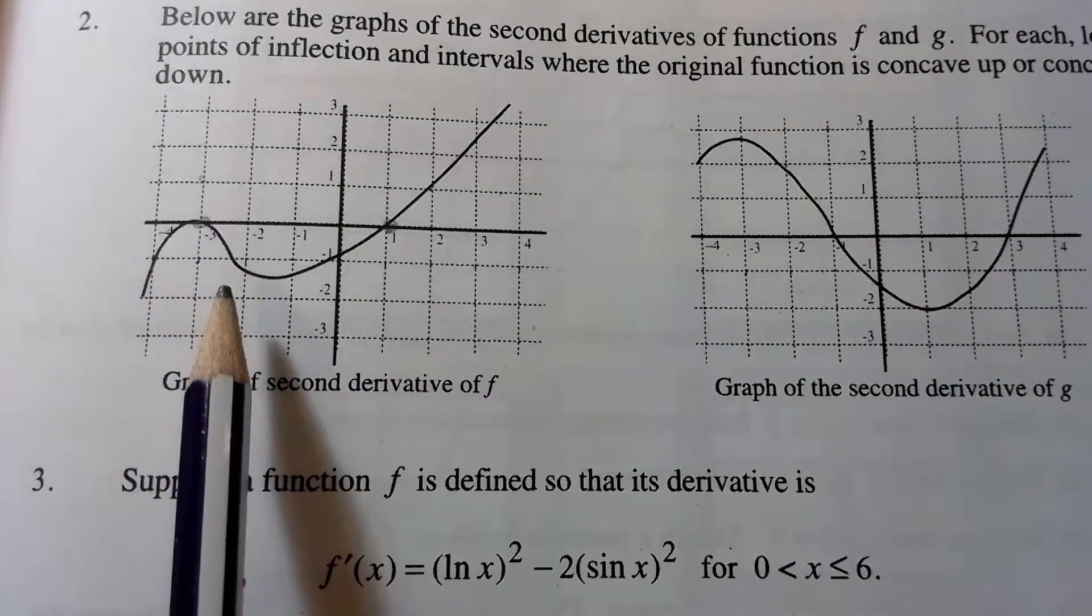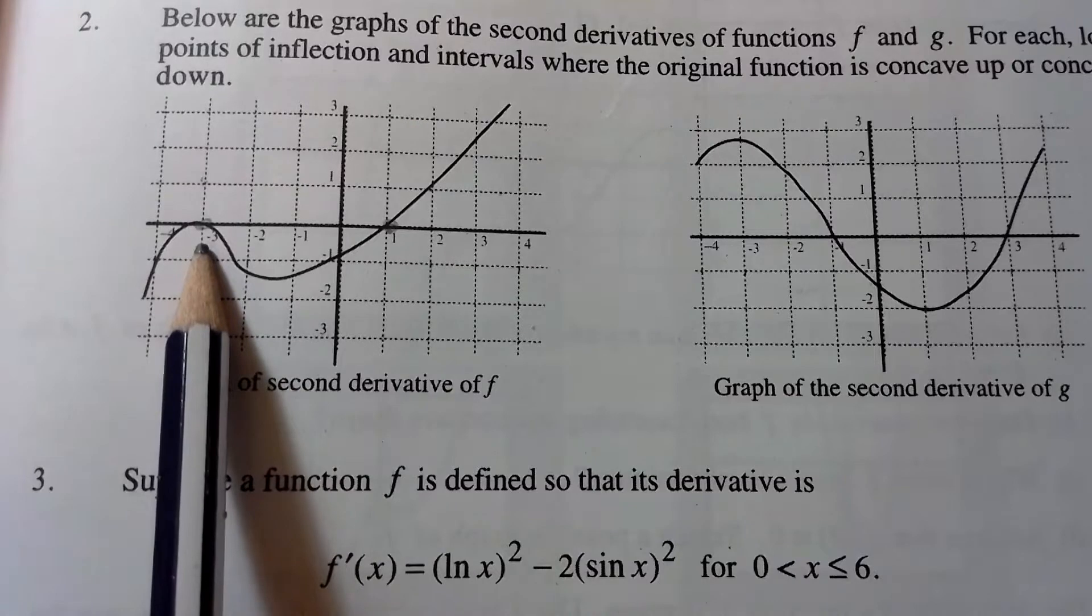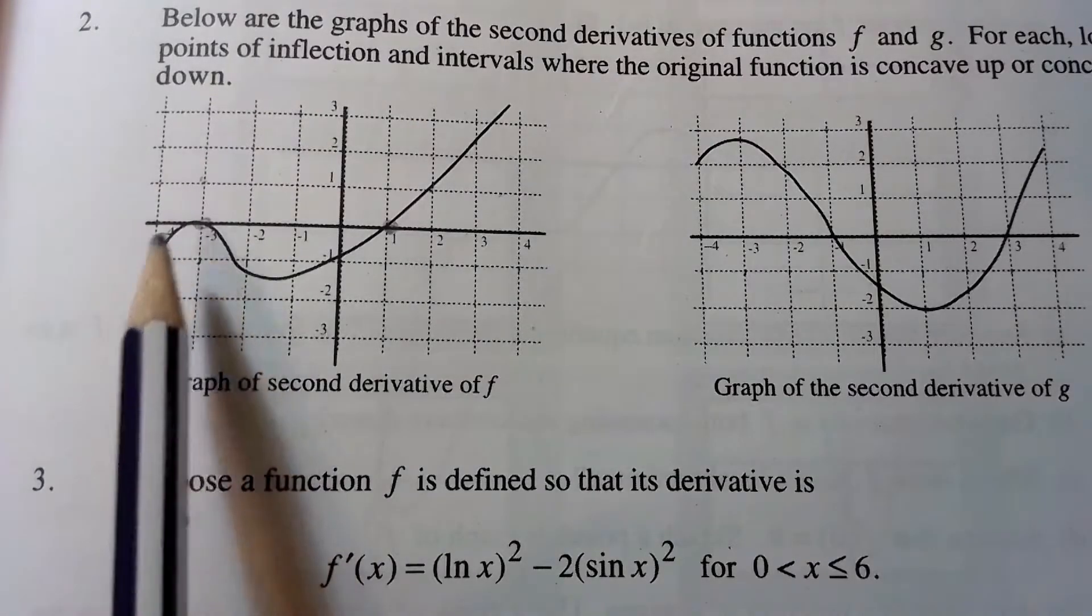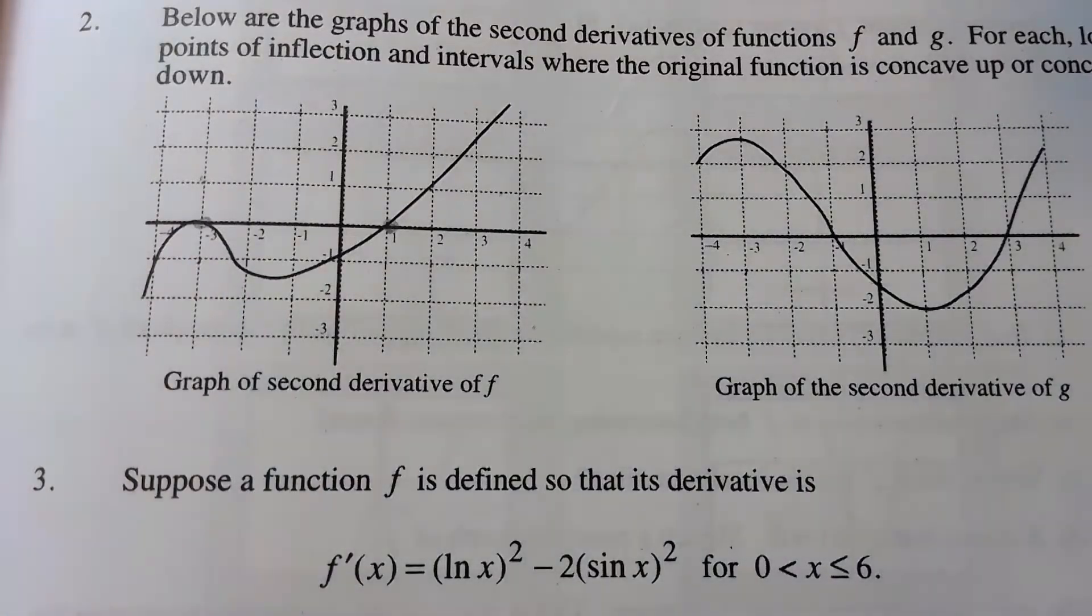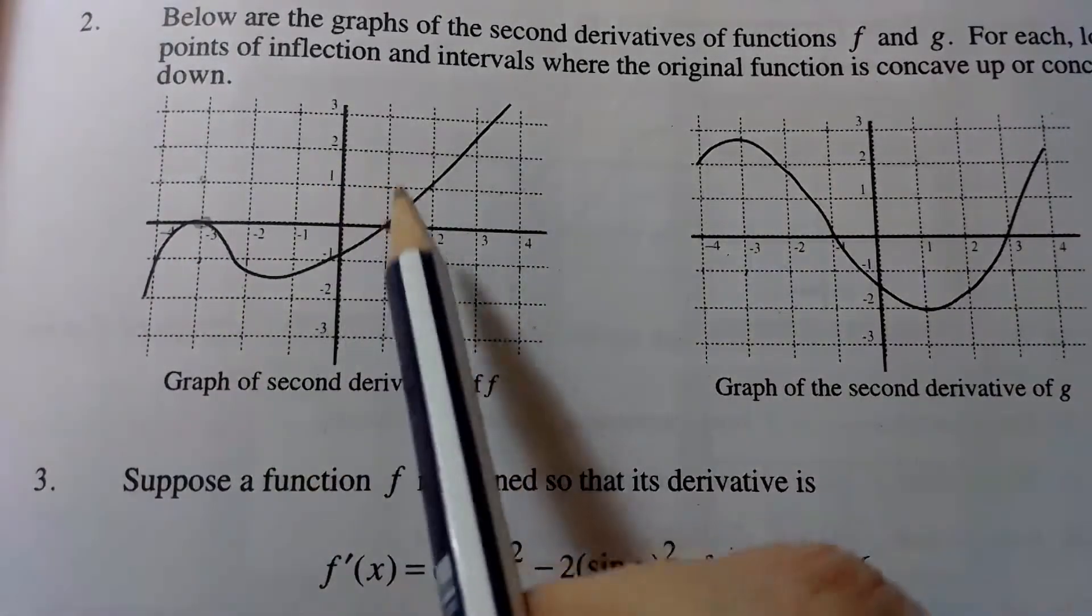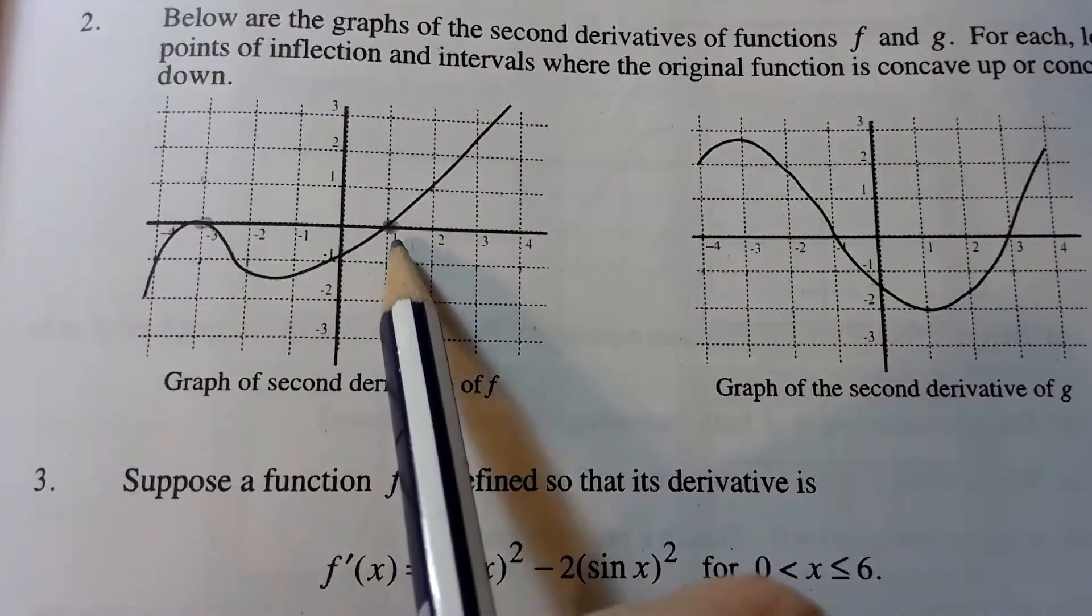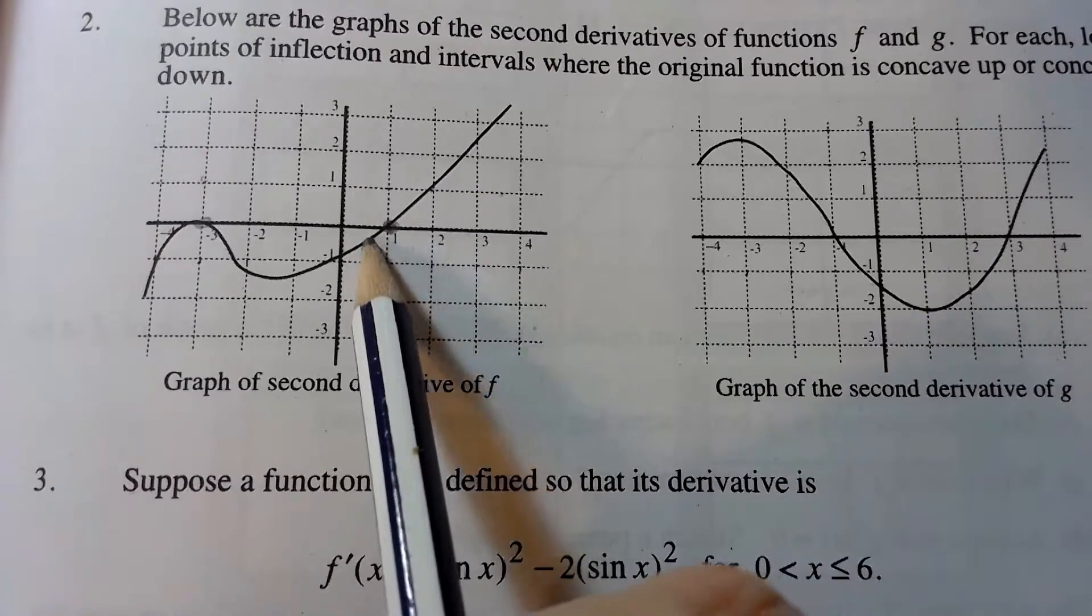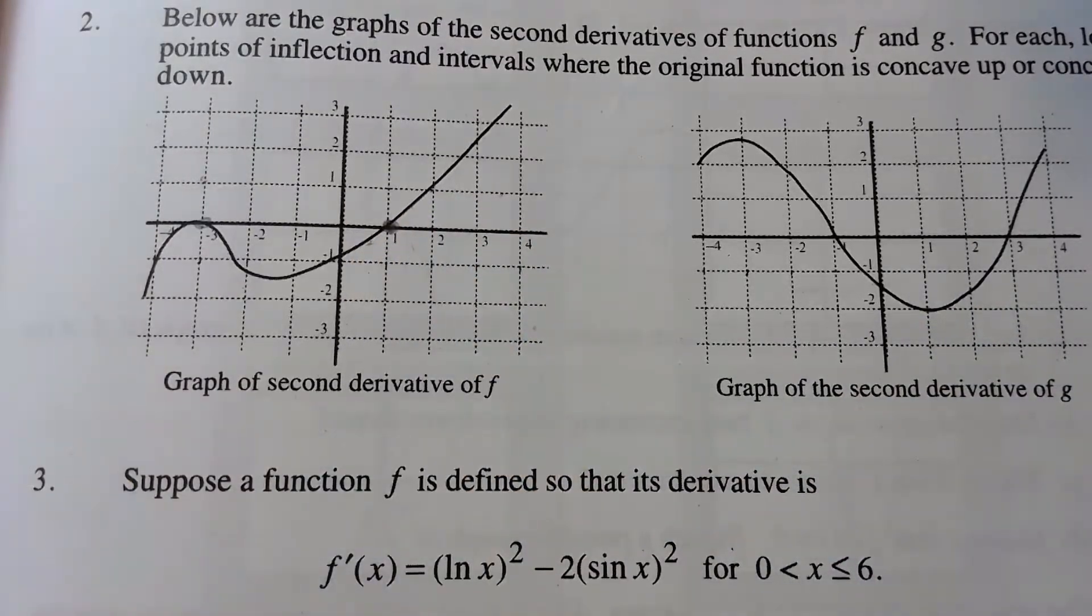Does the graph of f change concavity? Does it have an inflection point at x equals negative three? I would say no, because the second derivative does equal zero there, but it's not changing sign. It's not crossing the x-axis. But over here, at this point, we would expect an inflection point on the graph of f at x equals one, because the second derivative is changing sign. It's going from negative to positively valued at that point.